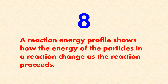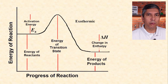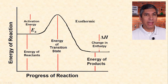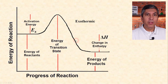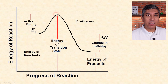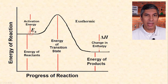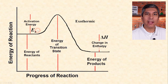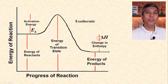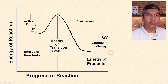Number eight: a reaction energy profile shows how the energy of particles changes as the reaction proceeds. In a typical exothermic reaction energy profile, the energy at the beginning represents the reactants and on the right side, the energy of the products. The peak in the middle represents the transition state — a high energy activated complex that only exists for a very brief moment. The activation energy (E_a) is the distance from the start up to that peak, representing the energy needed to get the reaction started. Delta H represents the difference between starting and ending energy; since this reaction has a net loss of energy, it is exothermic.